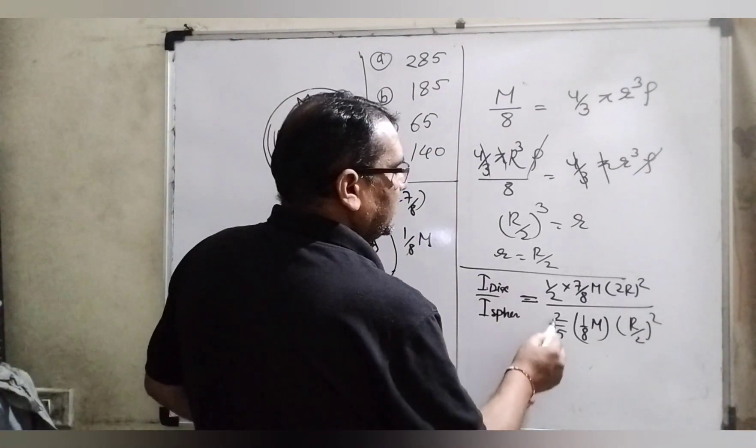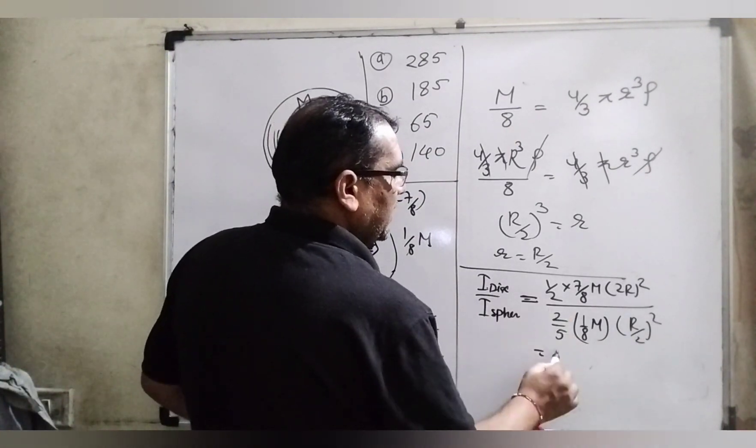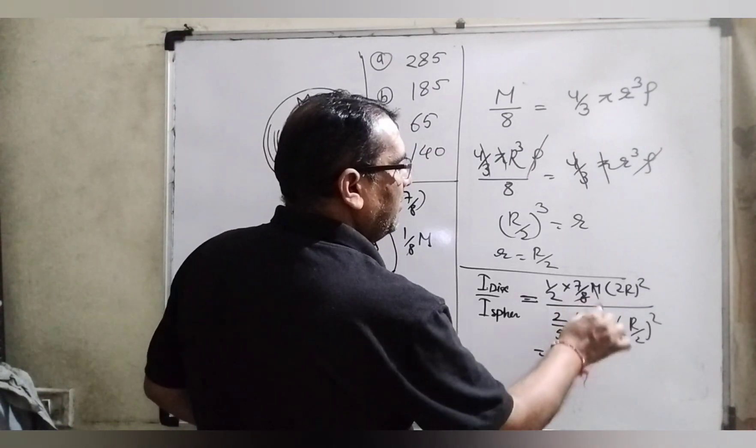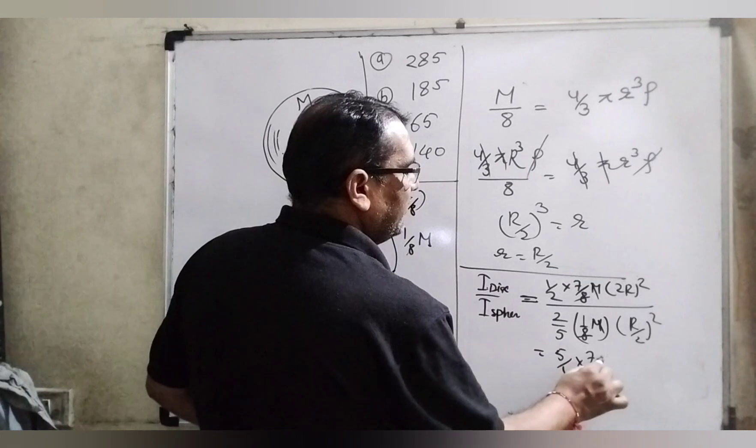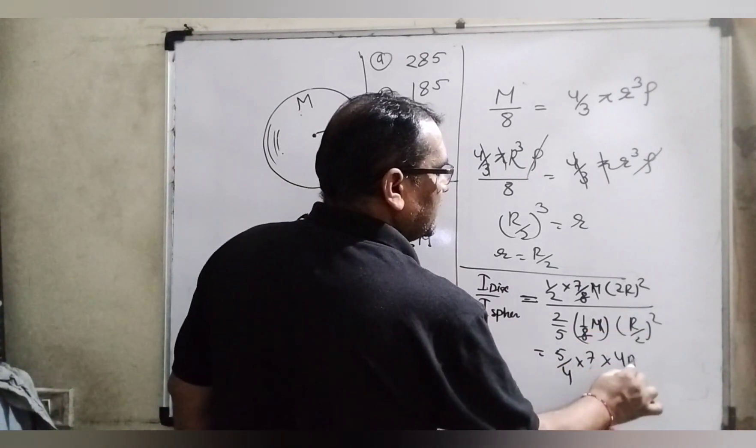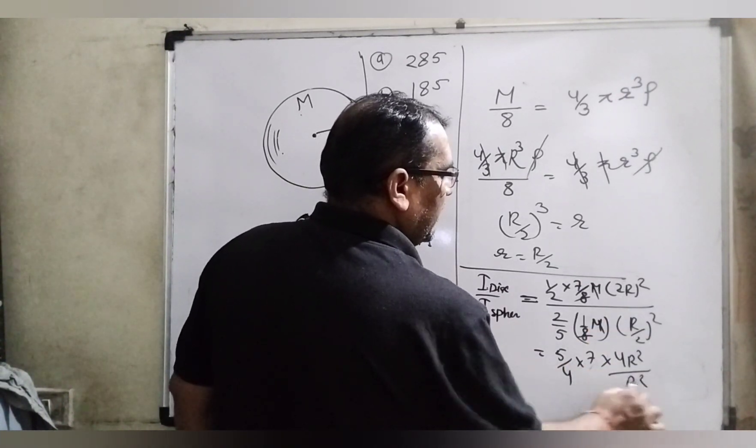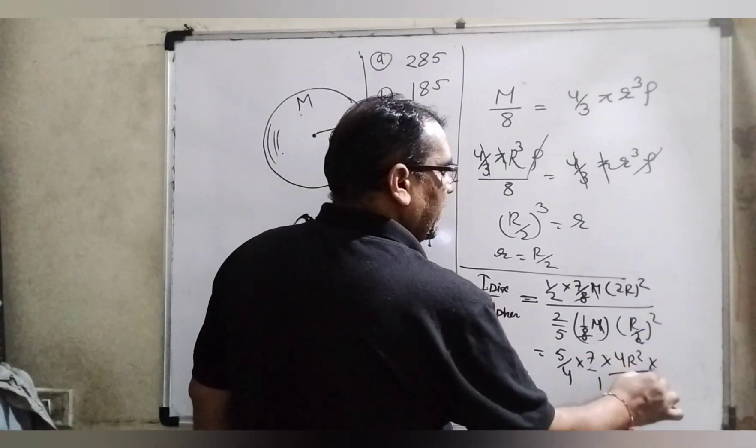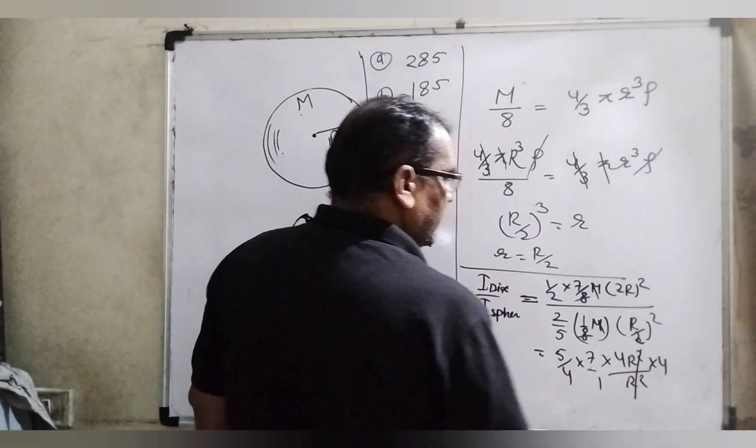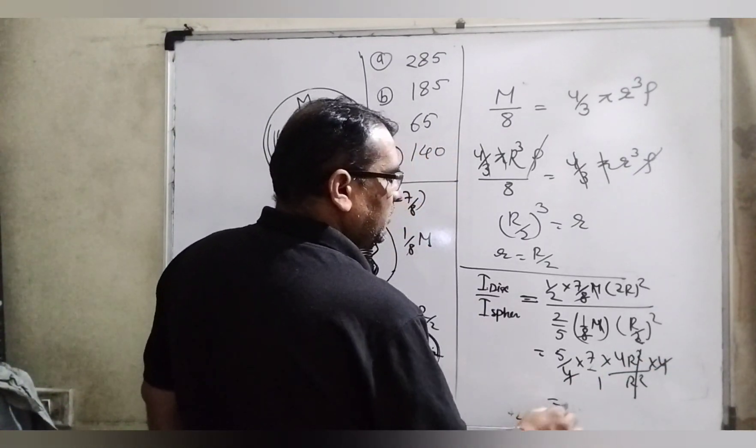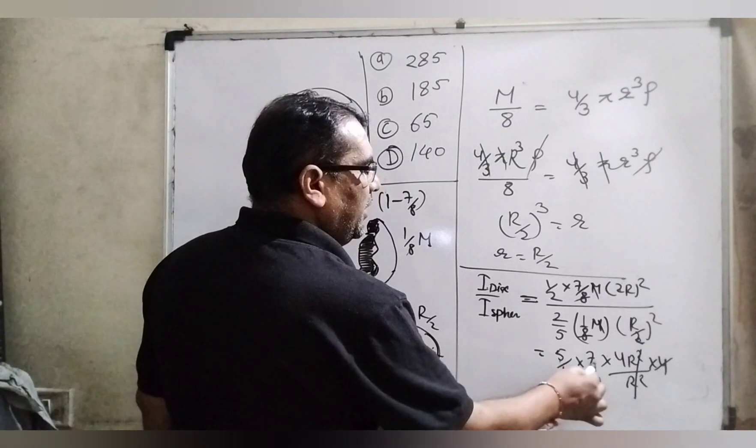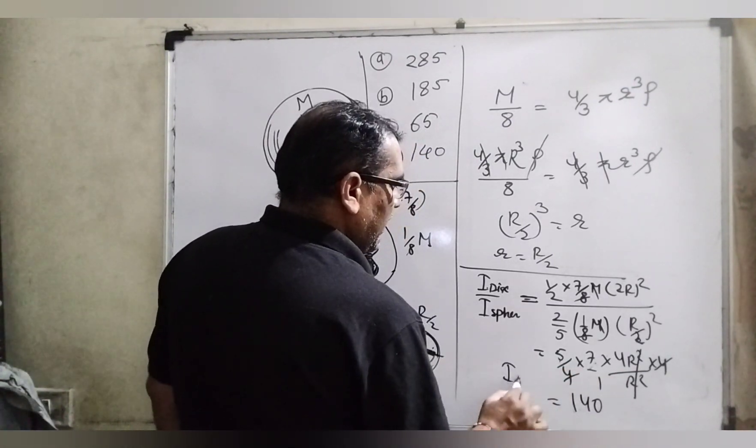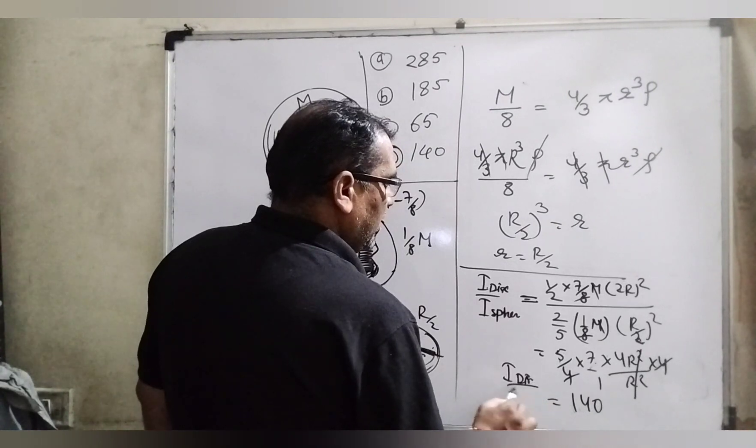Here you can see that 5 goes to upside: 5 by 4. 8, 8 cancel. M, M cancel. Then 7. And here 4R squared. Again R squared. And this 2 squared, 4 goes to numerator. R squared, R squared cancel out. 1, 4, 1, 4 cancel out. 4 times 5 is 20 into 7 is 140.